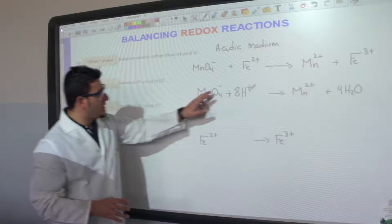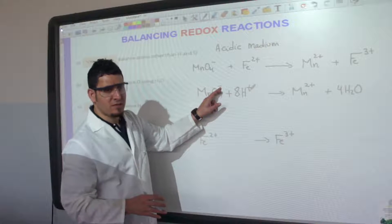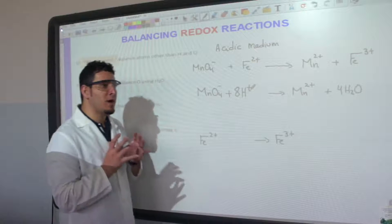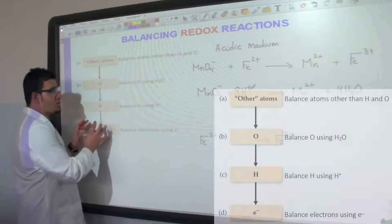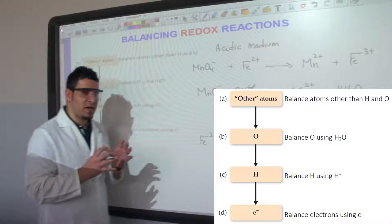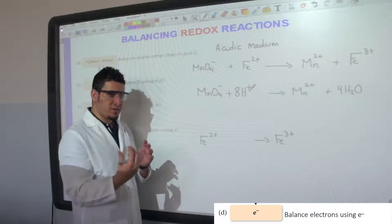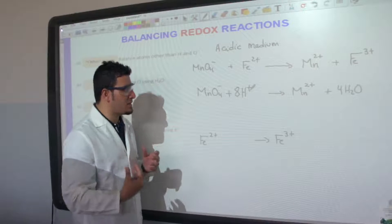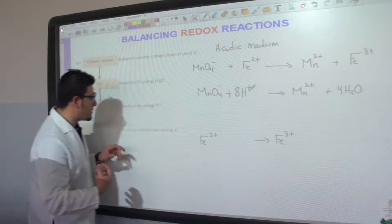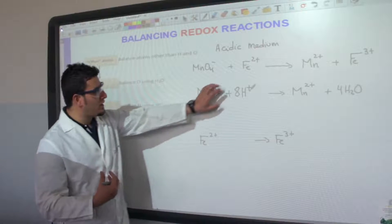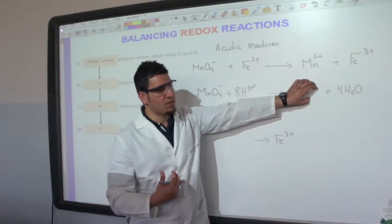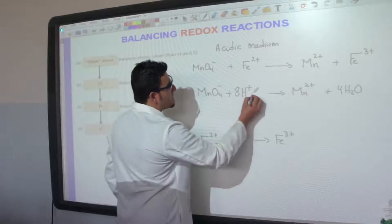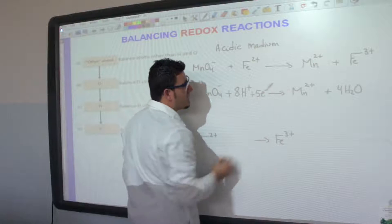However, the charge is not yet balanced. On the left side we have 8+ plus 1− giving 7+, and on the right side we have only 2+. To balance the charge, we add electrons as negative charge. Since 7+ minus 2+ equals 5+, we add five electrons to the left side to equalize the charge.